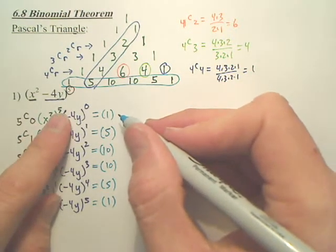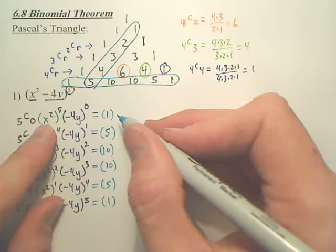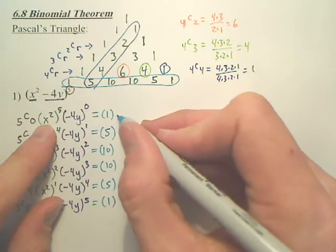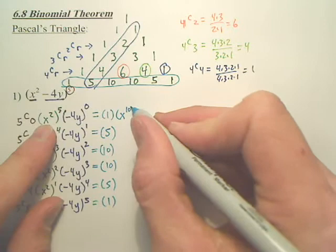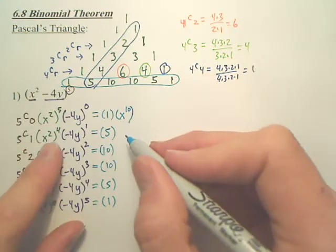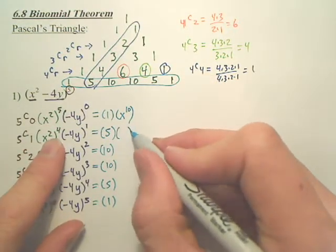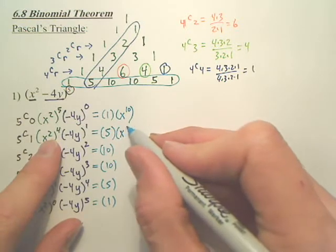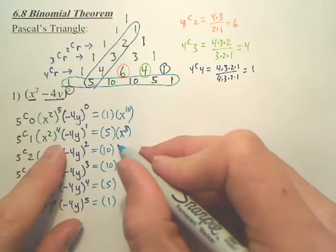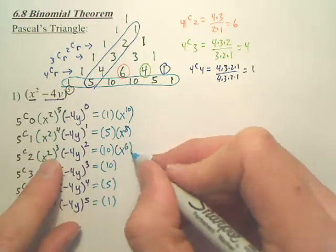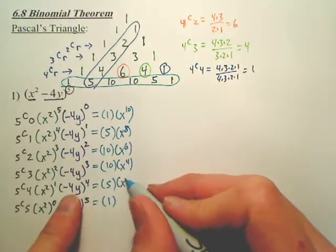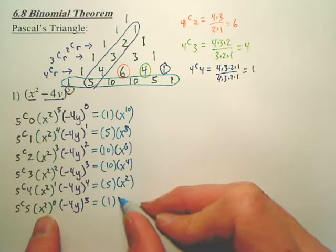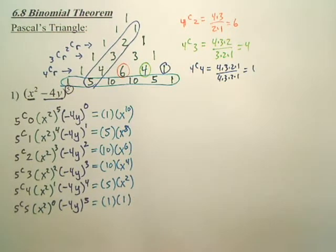Next, what's x squared to the fifth? That's x squared times itself five times, which gives x to the tenth. Multiplying the powers: x to the eighth, x to the sixth — it just goes down. There's a pattern. And anything to the zero power is one.